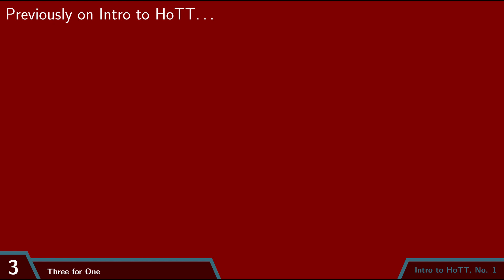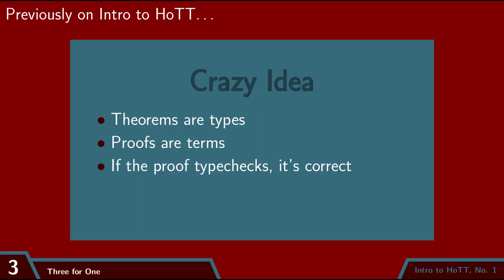Remember that a computer proof assistant was a special kind of typed programming language, where the types are mathematical theorems and the proof of a given theorem is a term of the corresponding type.